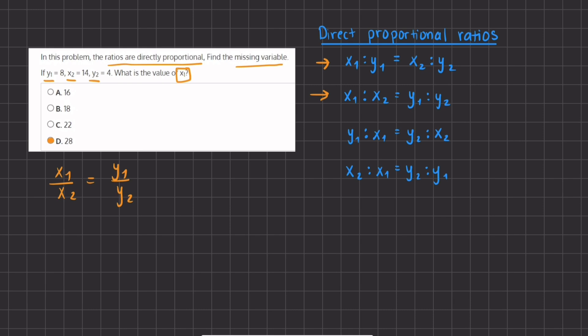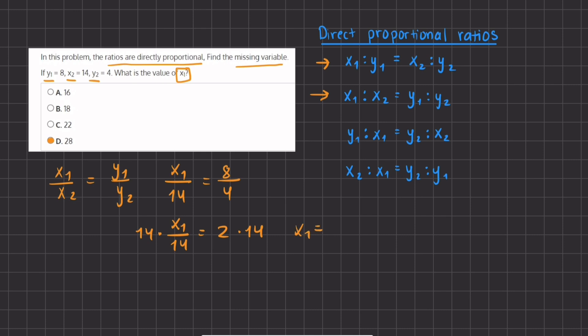In our second formula, we have x1 divided by x2 equal to y1 divided by y2. Plugging in: x1 is our missing variable, x2 is 14, y1 is 8, and y2 is 4. We can cross-multiply, or simplify the right-hand side: 8 divided by 4 simplifies to 2. So we have x1 divided by 14 equals 2. Multiplying 14 on both sides gives x1 equal to 2 times 14, which is 28 — the same answer as our first formula.